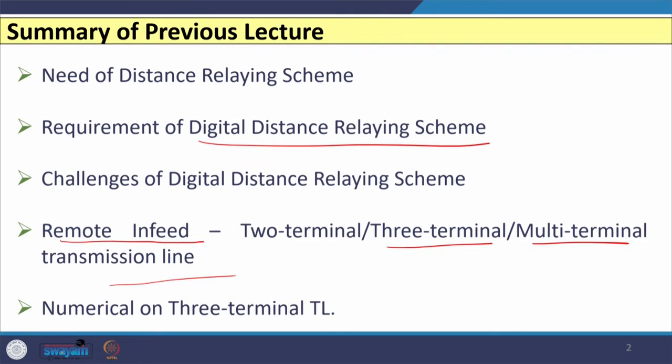Basically, the reach of the distance relay is affected when there is a remote in-feed or multiple in-feeds present. Along with that, when the impact of fault resistance is considered, the problem becomes more complex. We also discussed a numerical example on three-terminal transmission lines. Now let us discuss the second problem faced by the digital distance relay — series compensation.